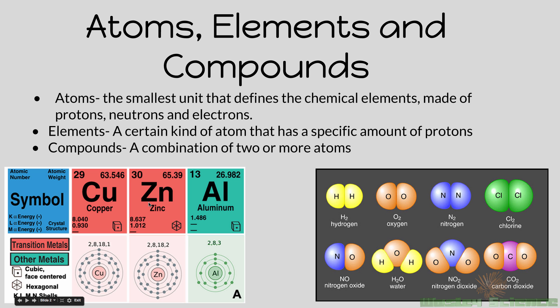An element is a certain kind of atom that has a very specific amount of protons. Zinc has 30 protons — zinc is the only element that has 30 protons. If it has one less proton, then it's copper. Copper has 29 protons, and aluminum has 13.